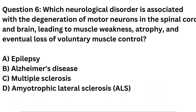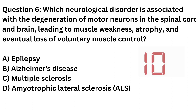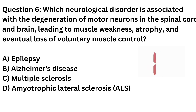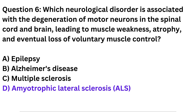Question 6. Which neurological disorder is associated with the degeneration of motor neurons in the spinal cord and brain, leading to muscle weakness, atrophy, and eventual loss of voluntary muscle control? a. Epilepsy. b. Alzheimer's disease. c. Multiple sclerosis. d. Amyotrophic lateral sclerosis, ALS. Correct answer: d. Amyotrophic lateral sclerosis, ALS.